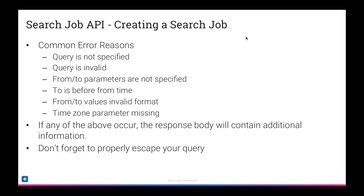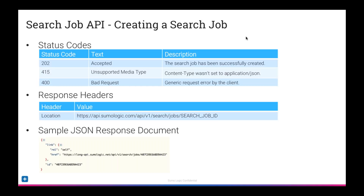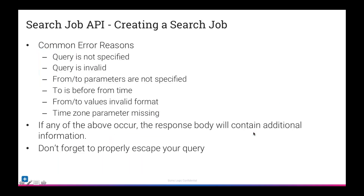Some common error reasons that can happen: if you forget to specify a query, we'll tell you. If your query is invalid, that will also be flagged. Maybe you forgot to specify the from and to parameters — all these parameters are required. If you specify a to time before the from time, so the date logic doesn't make sense, we'll tell you about that as well. If any of the above occurred, the response body will contain additional information. Key thing to remember: don't forget to properly escape your query. When you build a query in the UI, you can format it in lots of ways — just make sure you properly escape it when doing the API call.